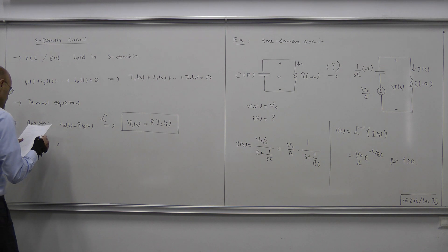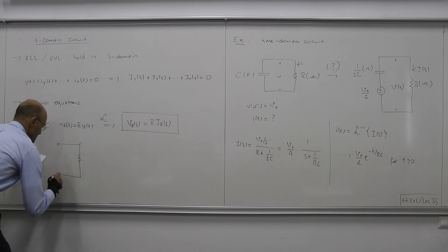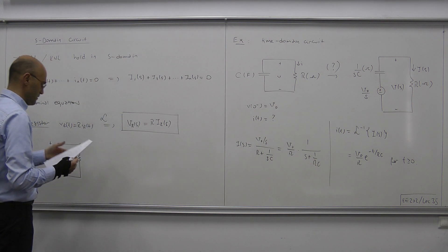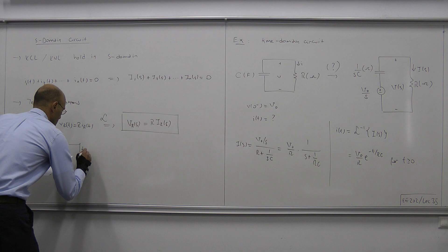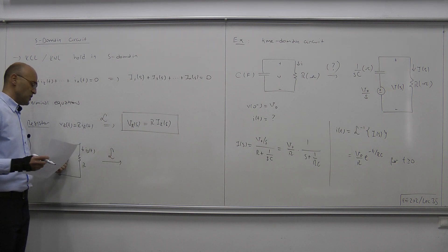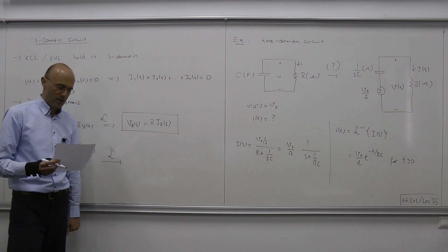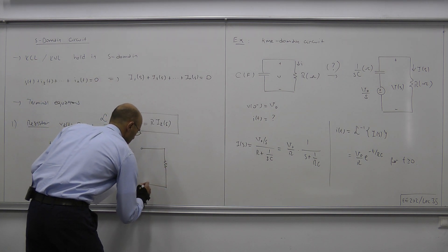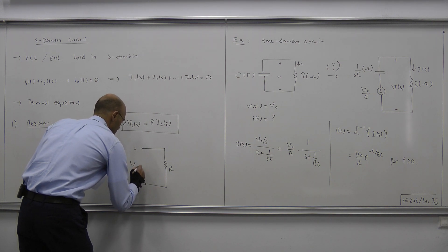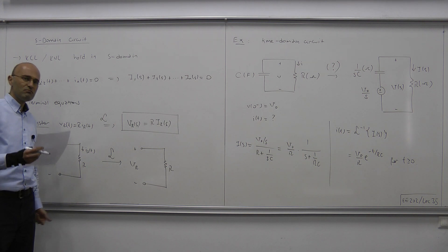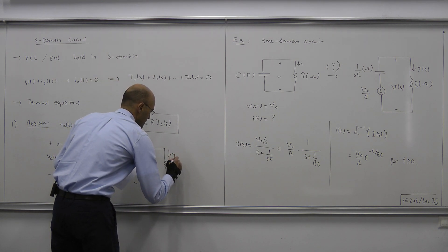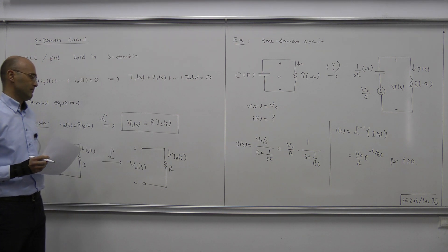As for the circuit diagram, the resistor looks the same in S-domain as in the time domain. The only difference is that we capitalize the lowercase letters: the voltage is now V(S) and the current is I(S), both functions of S.